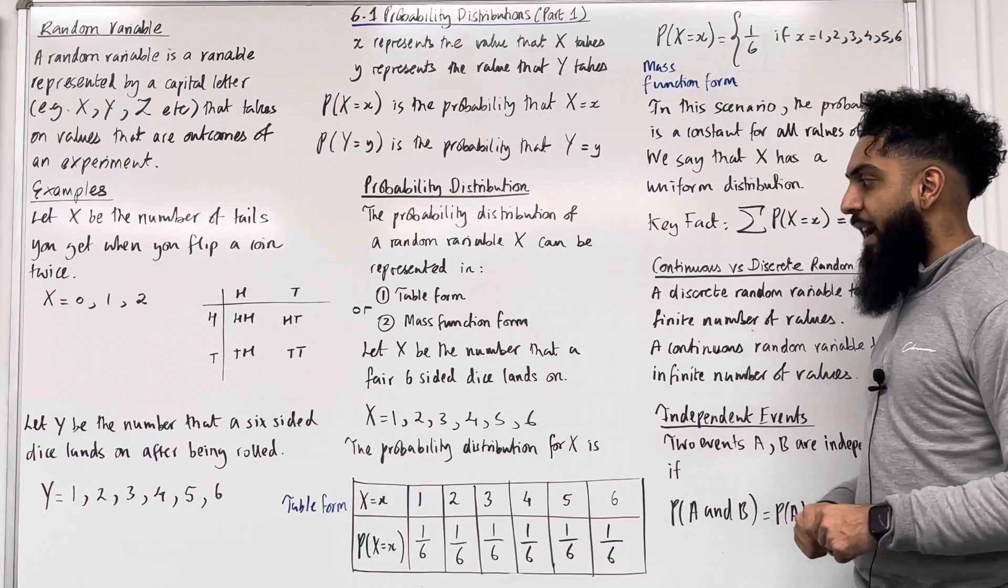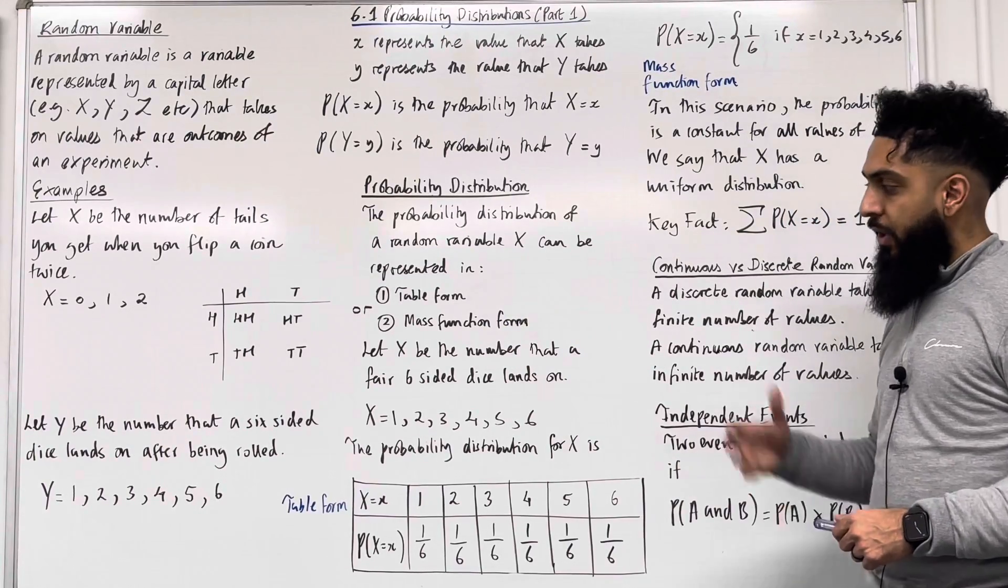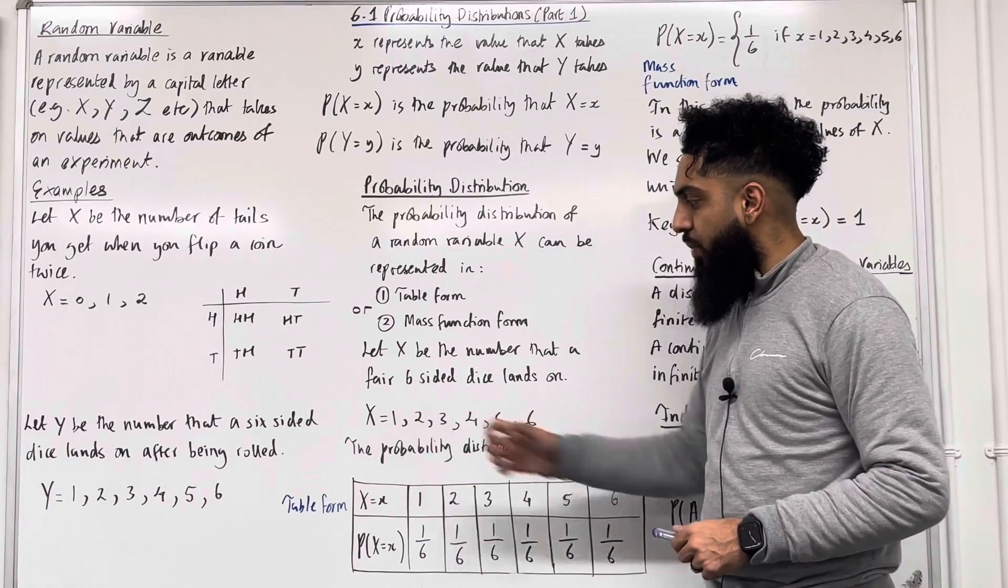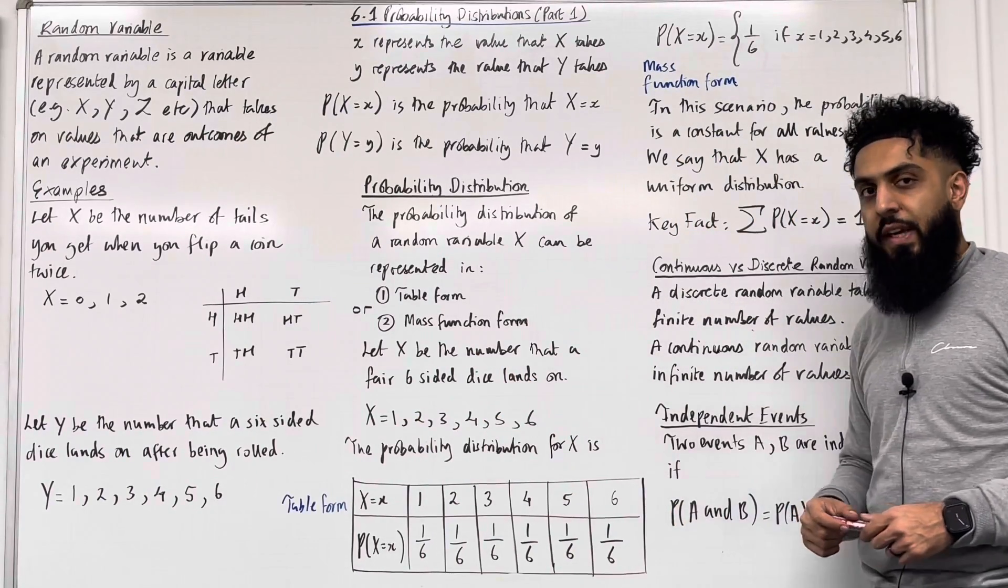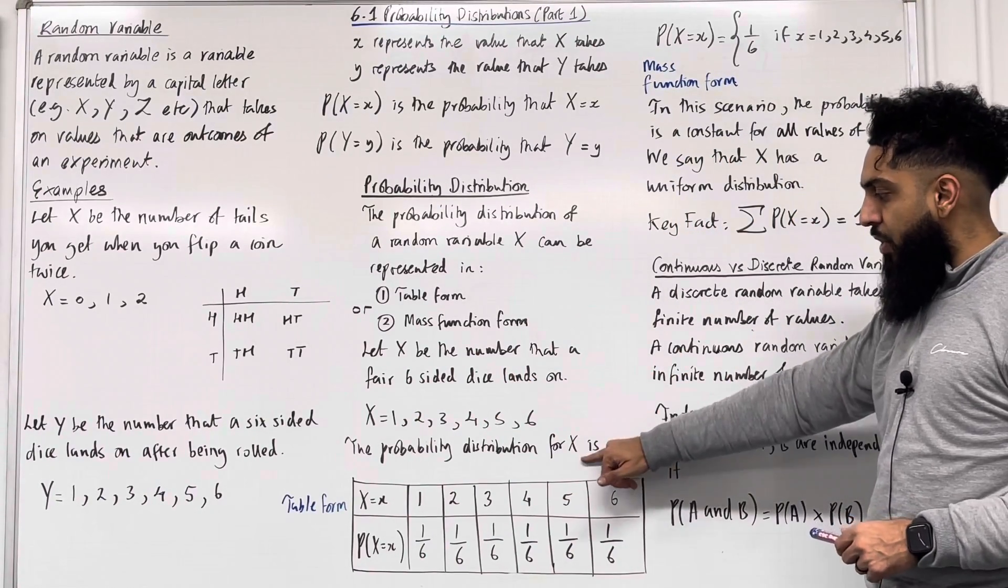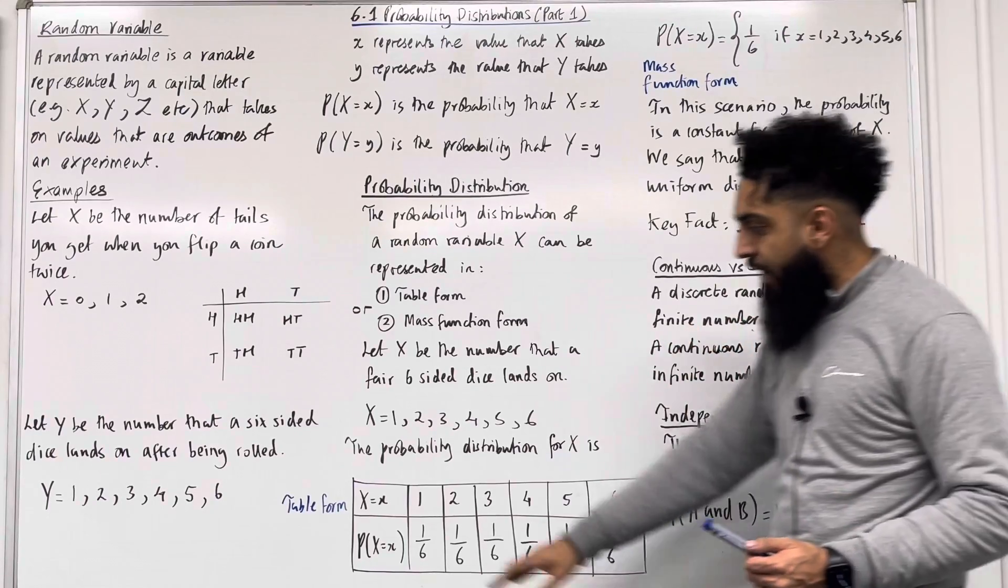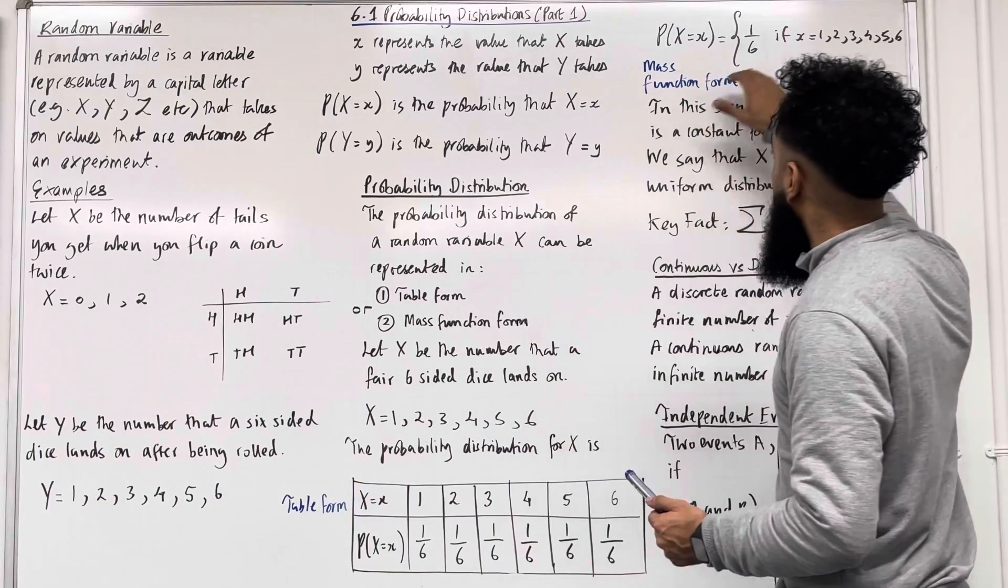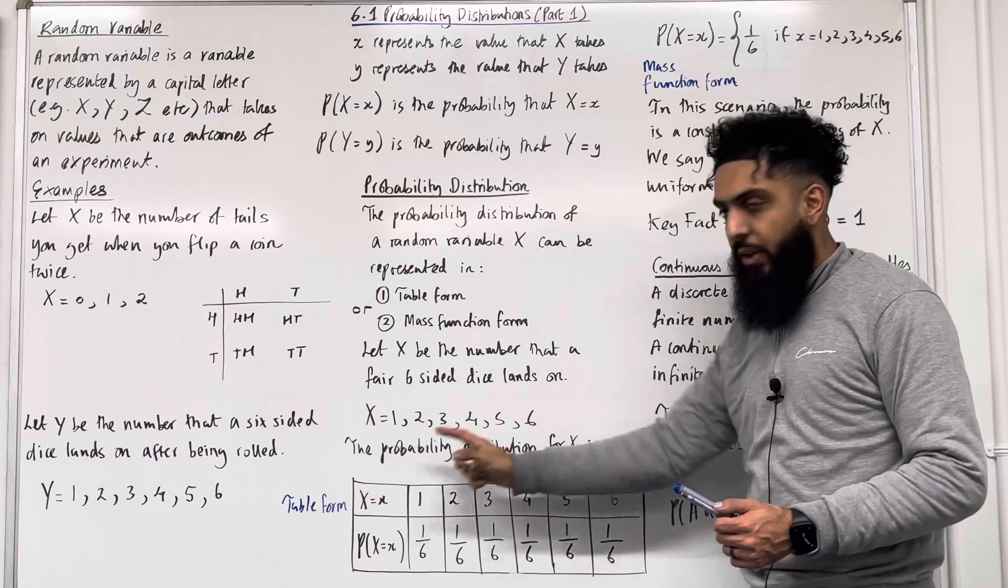Let capital X be the number that a fair 6-sided dice lands on. So capital X takes on the values 1, 2, 3, 4, 5, or 6. The probability distribution for X can be represented in two forms, either the table form or the mass function form. Let's focus on the table form.